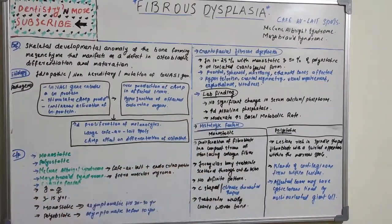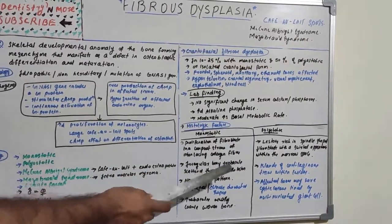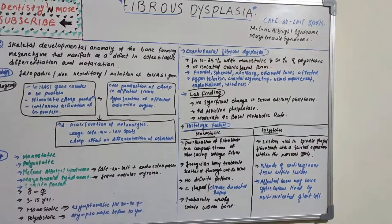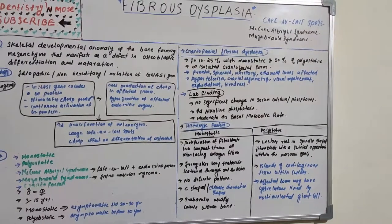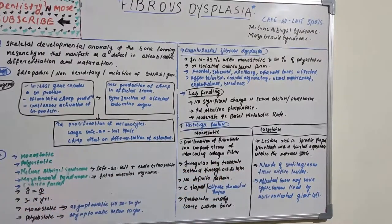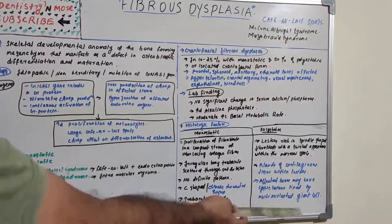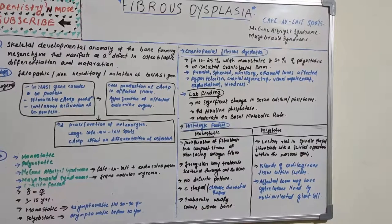Histologically, in monostotic form there is proliferation of fibroblasts in a compact stroma of interlacing collagen fibers, with irregular bony trabeculae scattered throughout the lesion in a C-shaped or Chinese-letter pattern of coarse woven bone. In polyostotic form, lesions are rich in spindle-shaped fibroblasts with a swirled appearance within the marrow space, islands of cartilaginous tissue within the lesion, and cystic lesions lined by multinucleated giant cells.